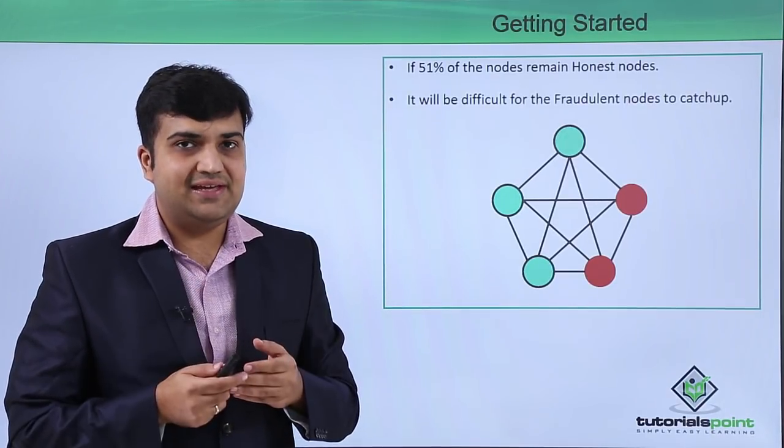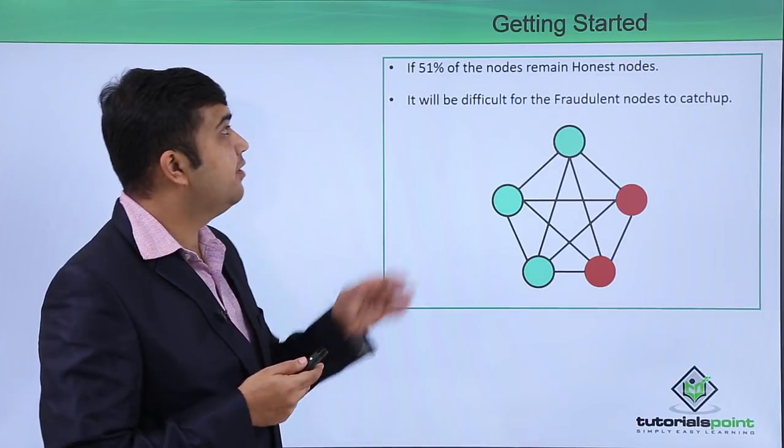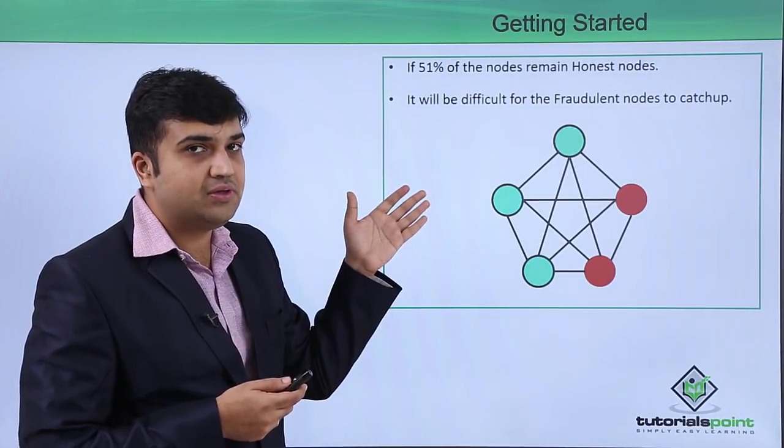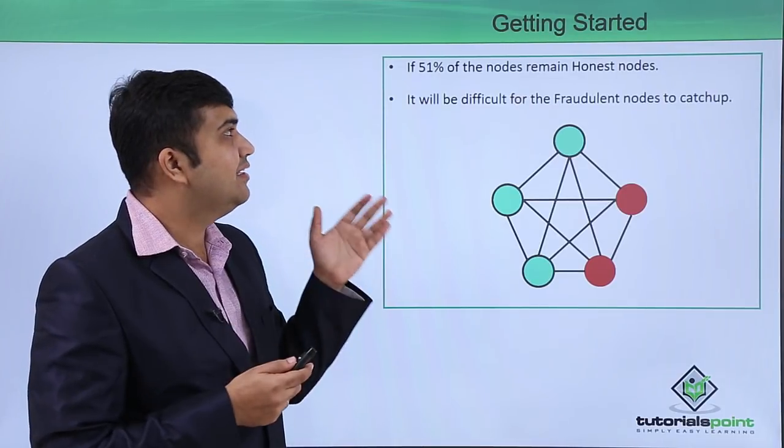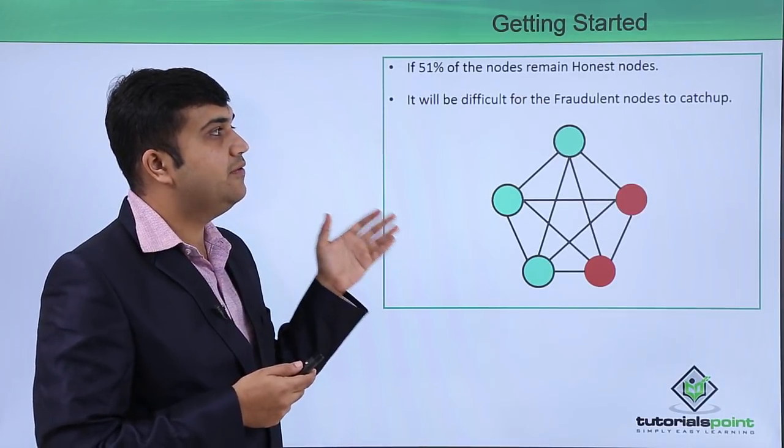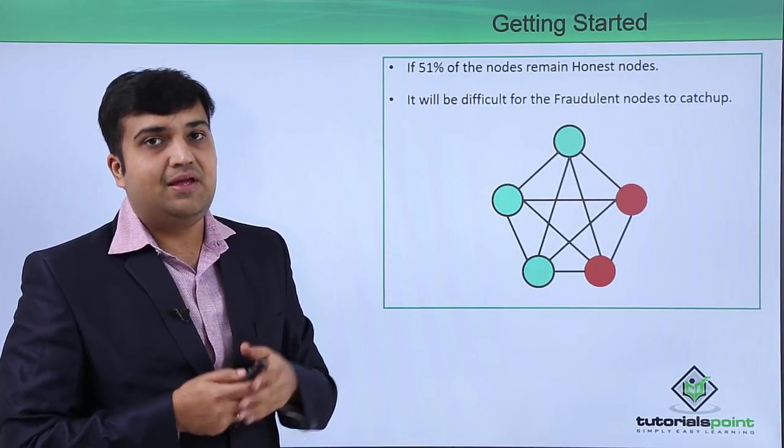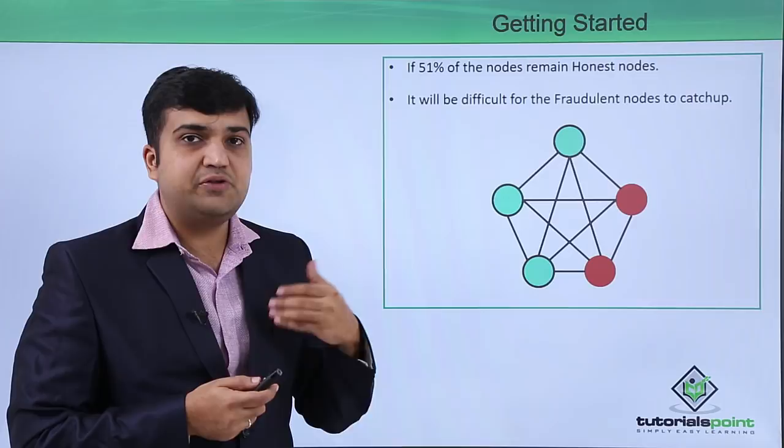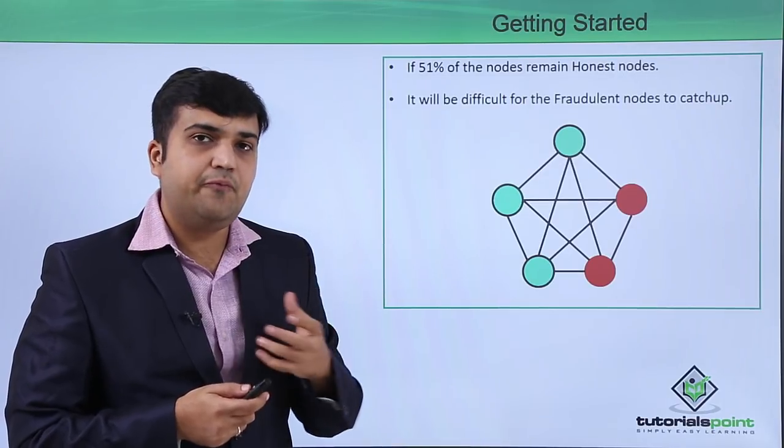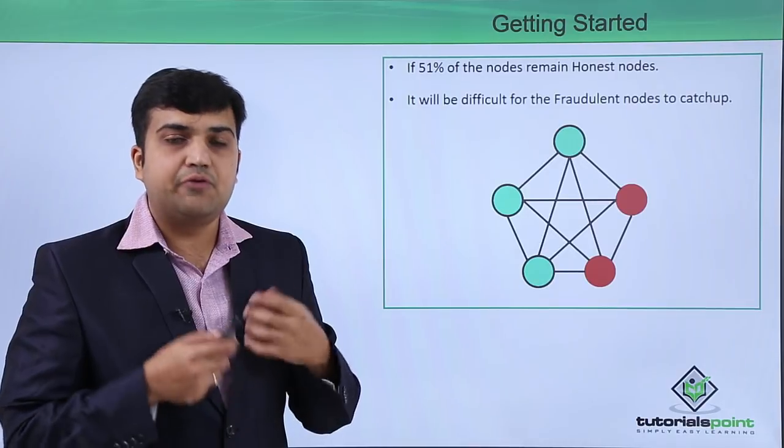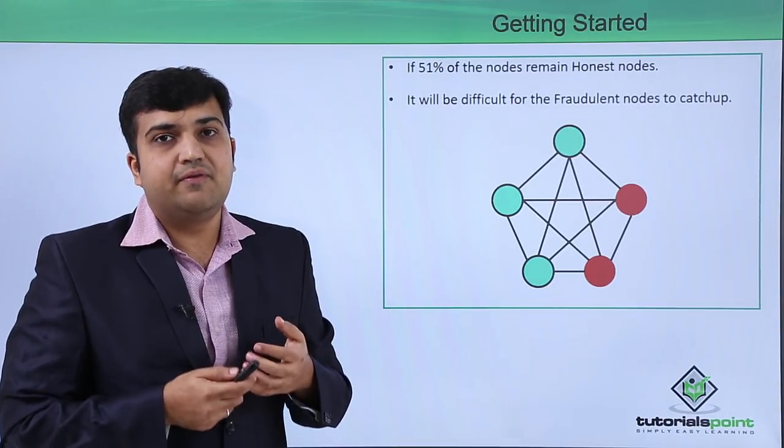In this case, if 51% of the nodes remain honest nodes, then the blockchain algorithm says it will be very difficult for the fraudulent nodes to catch up. As we will see in future videos, the proof-of-work concept makes it more difficult for fraudulent nodes to catch up with honest nodes if the number of blocks is very high.